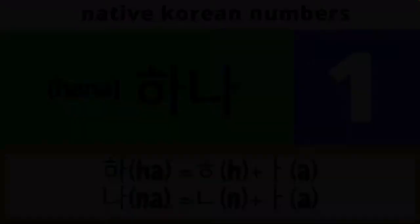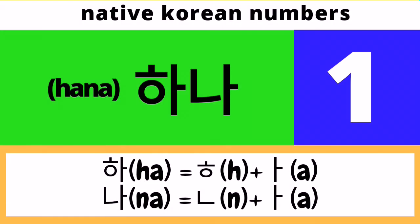How do we spell Hana in Hangul? Let's start with the first syllable. To be able to write the syllable Ha in Hangul, we need to draw first a Hieut character followed by an A character. For the second syllable Na, we need to draw first a Nieun character followed by an A character.